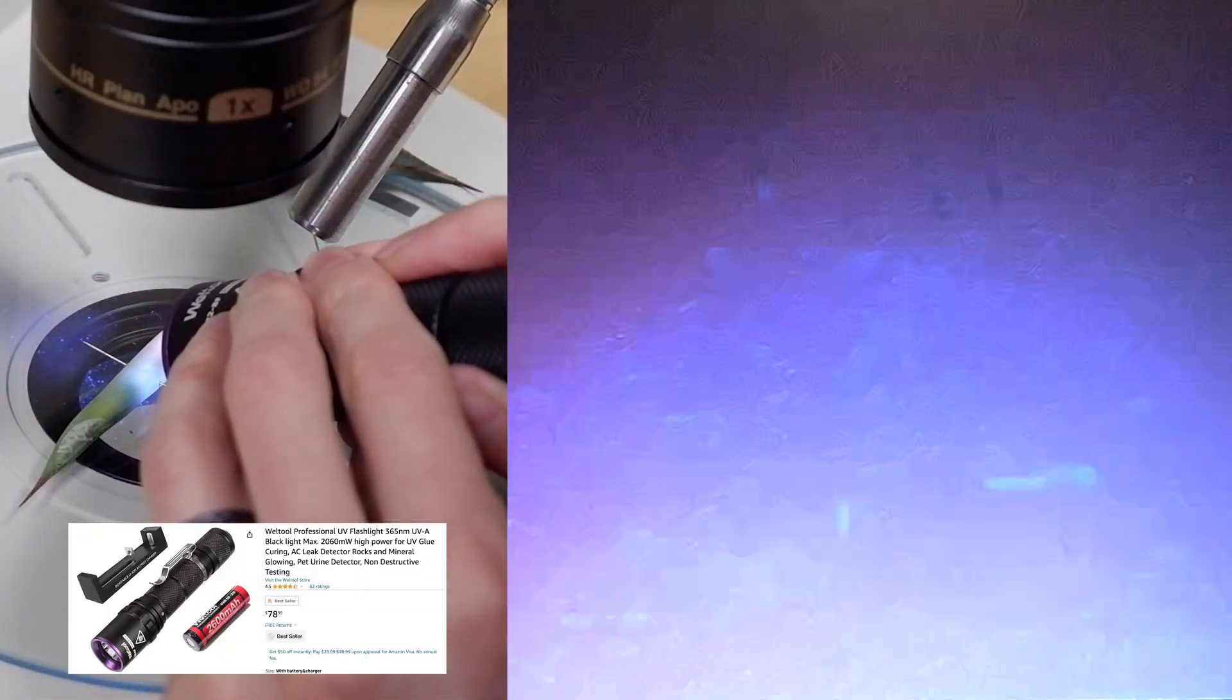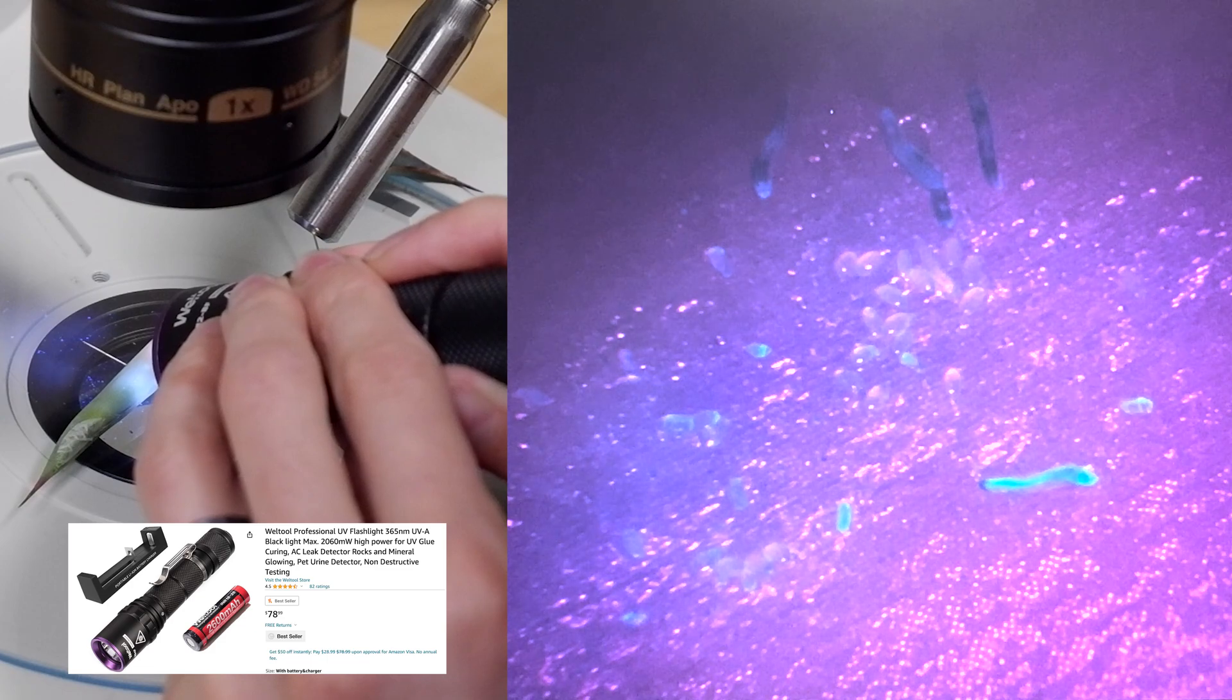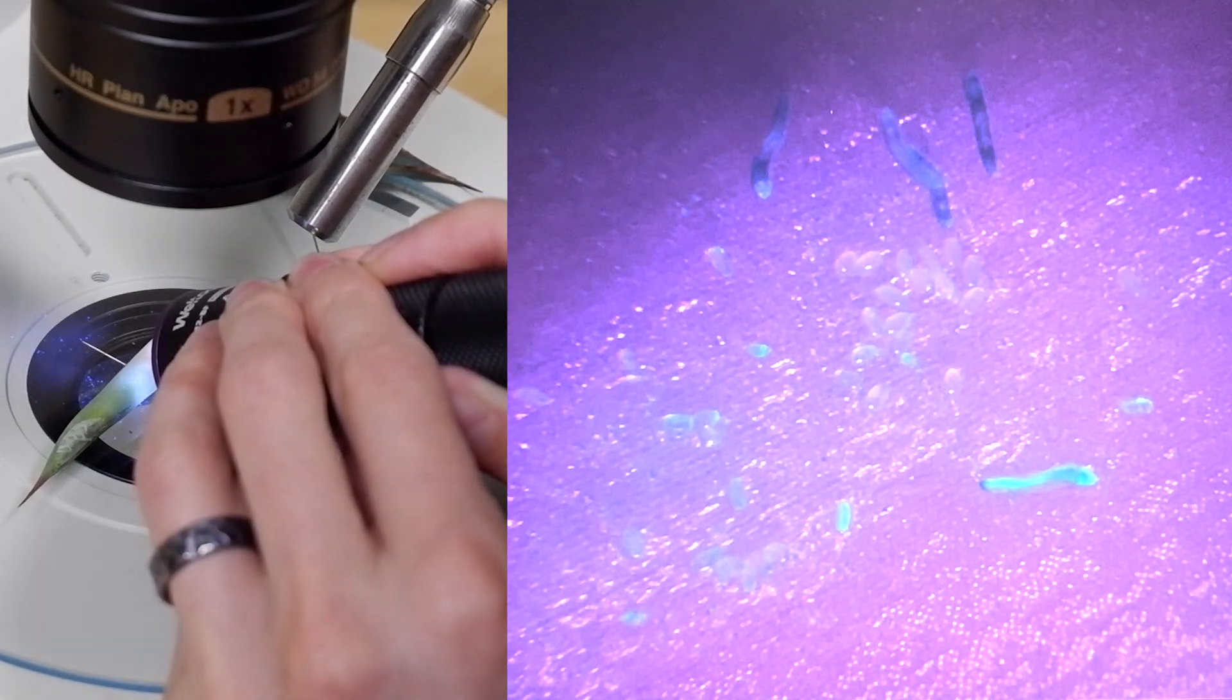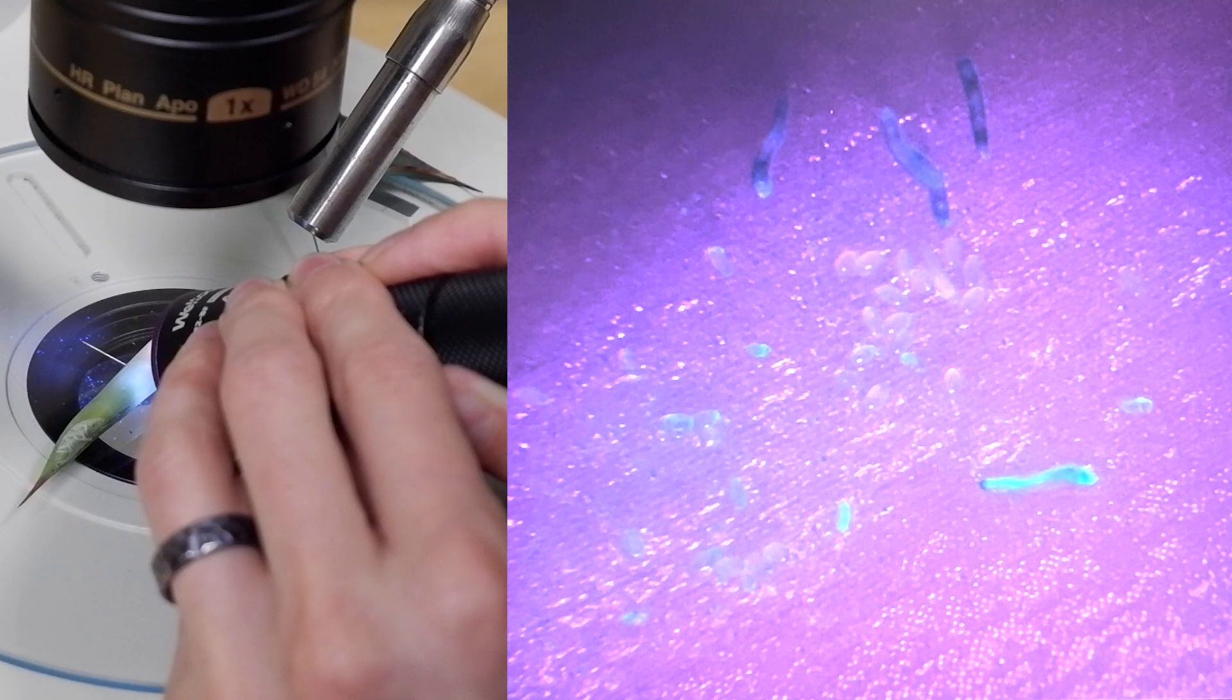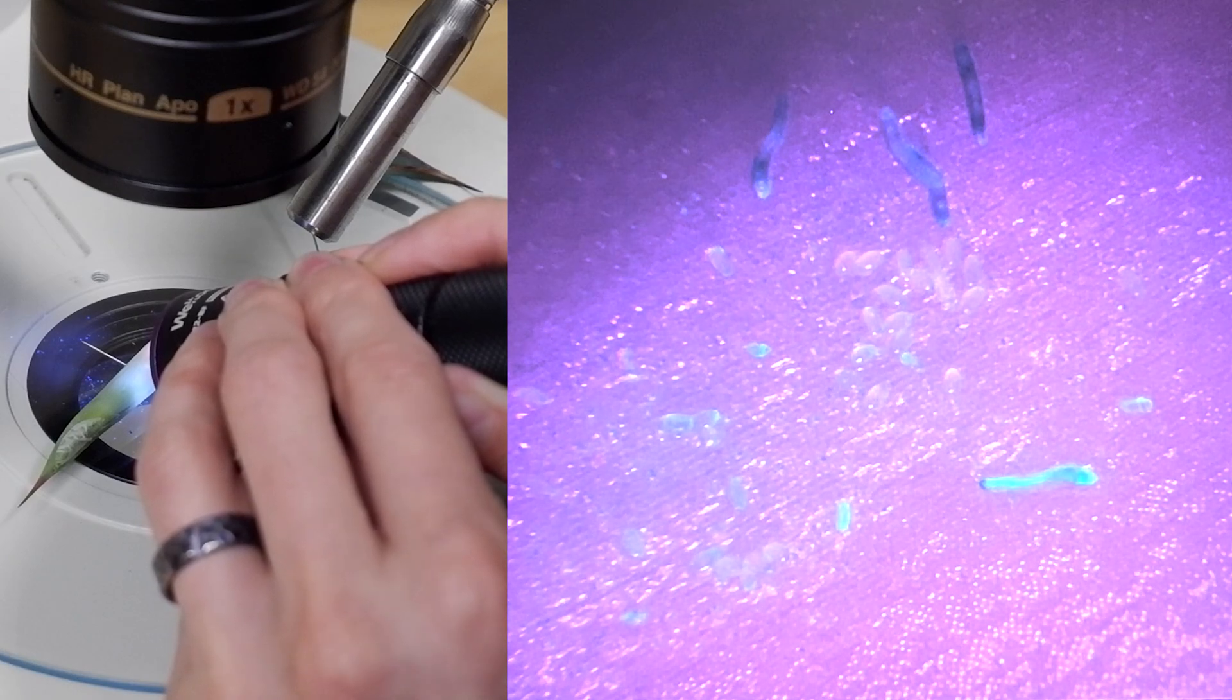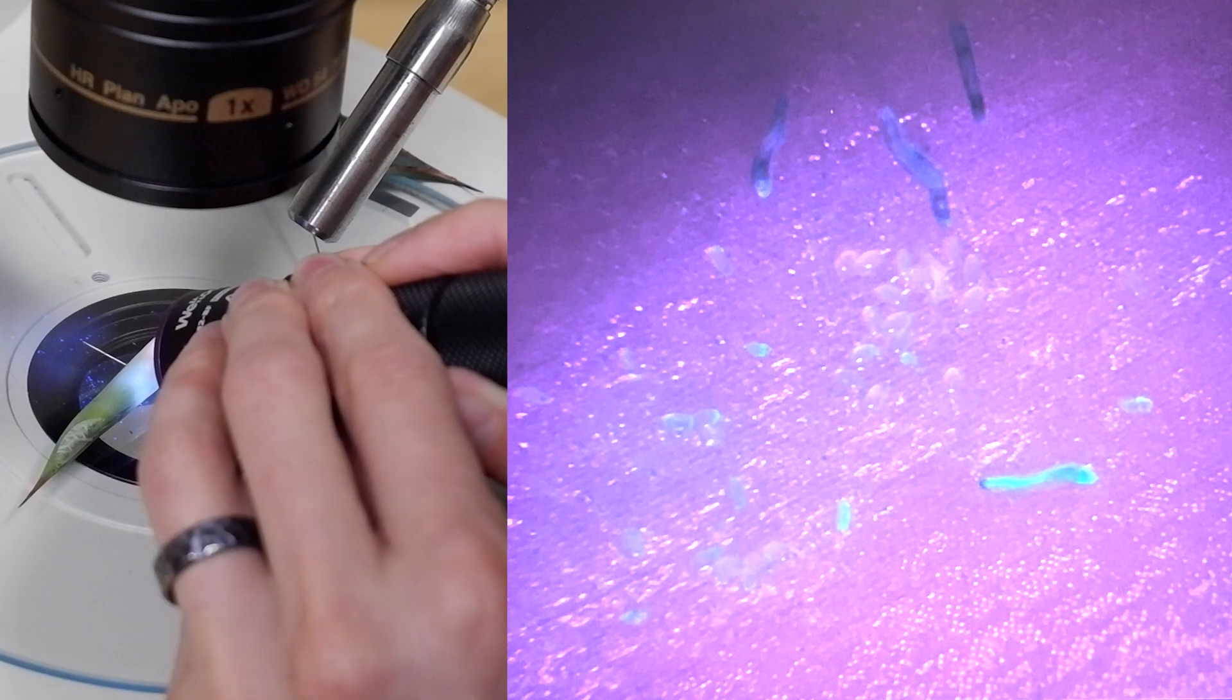And then the last one is the one I usually use the most, which is the Well Tool. This seems to have the most contrast where you can see the mites very clearly and you can also see all of the eggs quite clearly as well. So this is a really good example of the different lights and how the ones that illuminate everything evenly aren't as effective as the ones that illuminate things selectively.